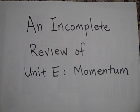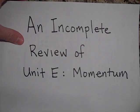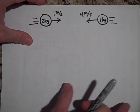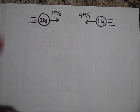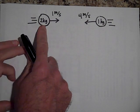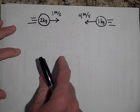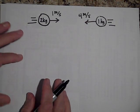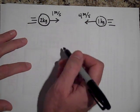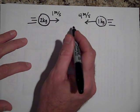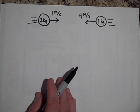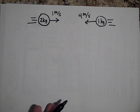Here begins an incomplete review of unit E momentum. We have two objects: a two kilogram mass moving at one meter per second and a one kilogram mass moving at negative four meters per second. They are going to hit and stick together. Can you tell me what the velocity will be of the two combined? Go ahead and pause.